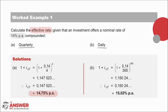For B, the 14% is compounded daily, so we use the interest rates equation and on the right-hand side divide the 14% by 365 and take it to the power of 365. Solving for I_EFF, we get an answer of 15.02% per annum. This is even larger, seeing as though it has been compounded 365 times during the year, which means it grows more than when compounded only 4 times per year.